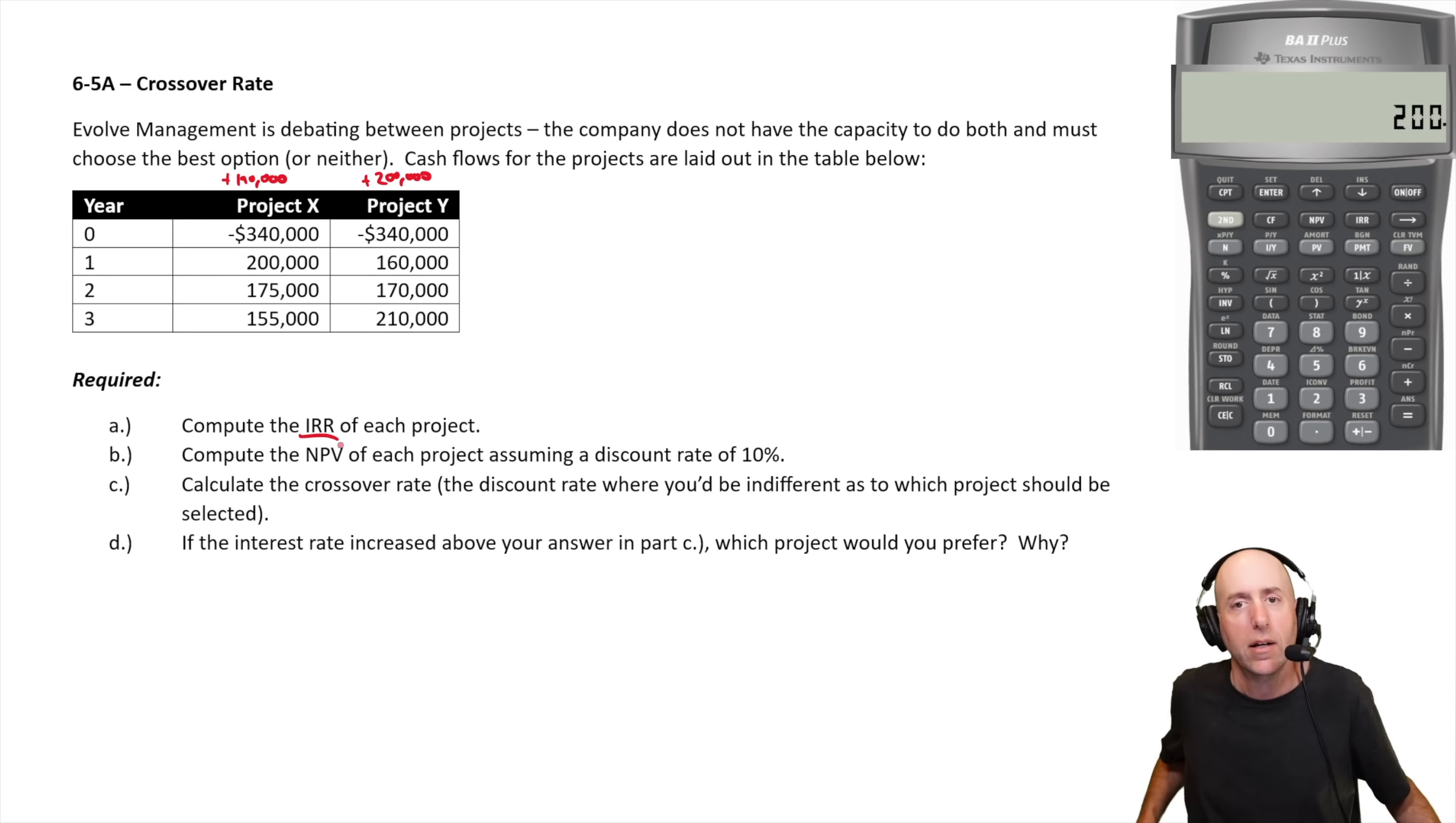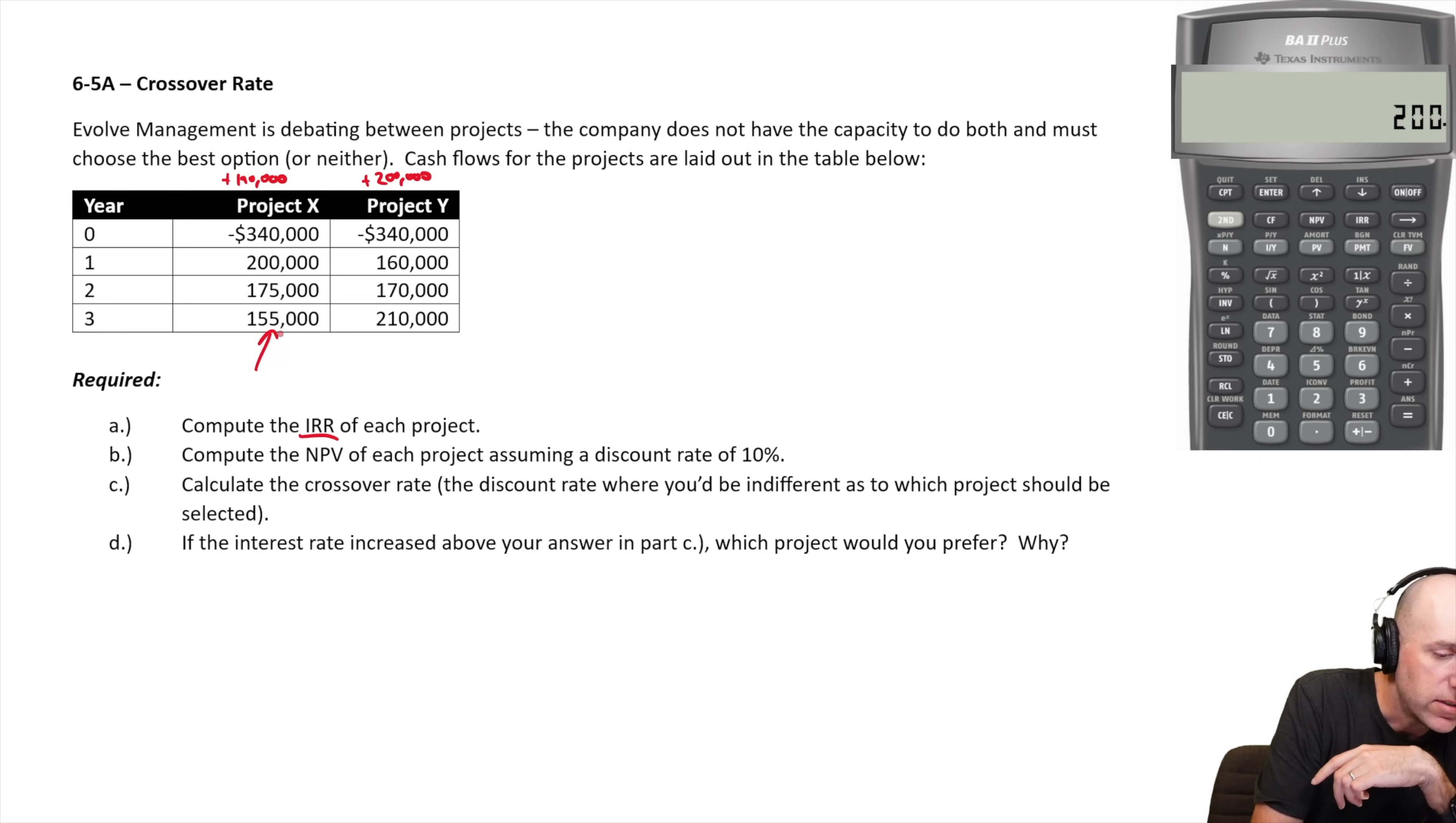To compute IRR, that's the point where the net present value of a project is zero. What is the rate at which the net present value is zero? We're going to enter these numbers into our calculator and compute IRR. Let's do it.